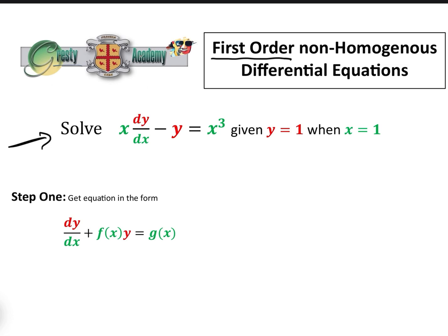Now first of all, just briefly, first order means that the equation only has dy dx, i.e. not d2 y dx squared or anything like that, and non-homogeneous means that this is not zero.